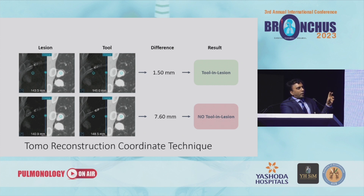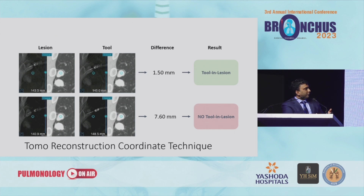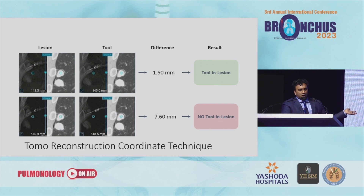NOAA came out with a way to mitigate these issues. It's novel and quite simple: they find the best image of the needle or tool and compare it with the best image of the actual lesion. If there's a divergence greater than 4 millimeters, it's not tool-in-lesion. If it's less than 4 millimeters, then it is tool-in-lesion. They call this the tomoreconstruction coordinate technique — I think the marketing department is going to call it Strike Point.